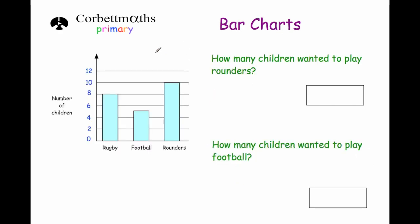So let's have a look at our first question. How many children wanted to play rounders? The rounders bar is the tallest one on the end — if we go up and across we can get to the number 10. So 10 children wanted to play rounders.